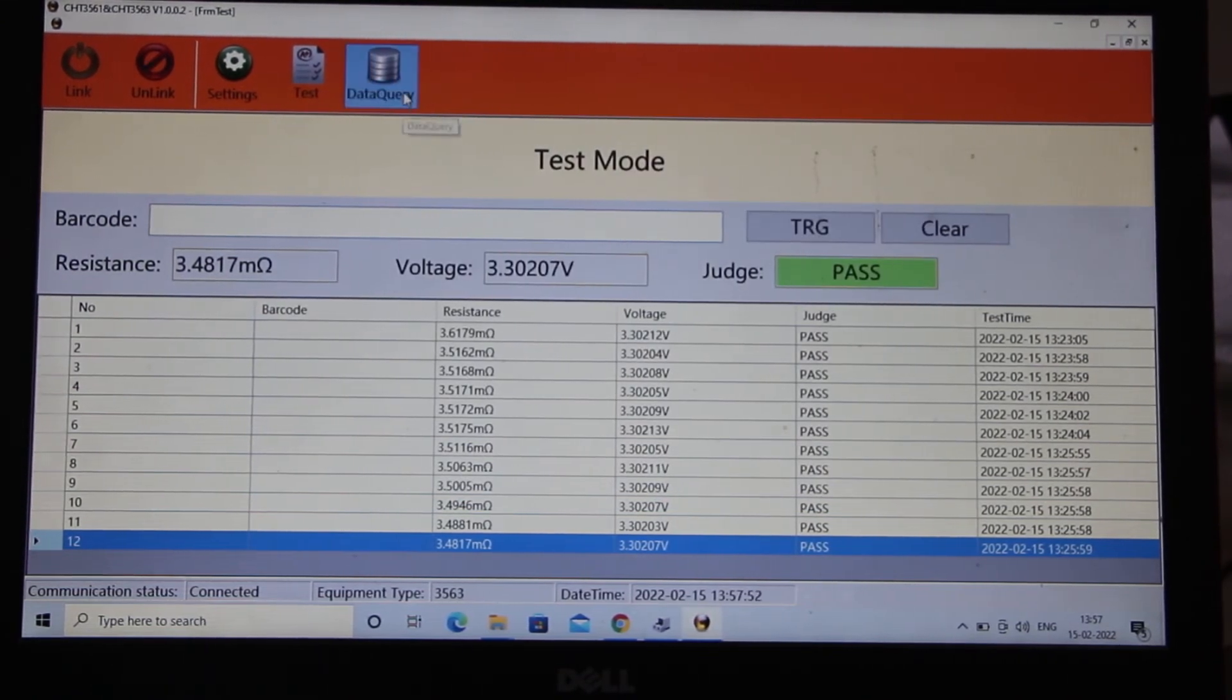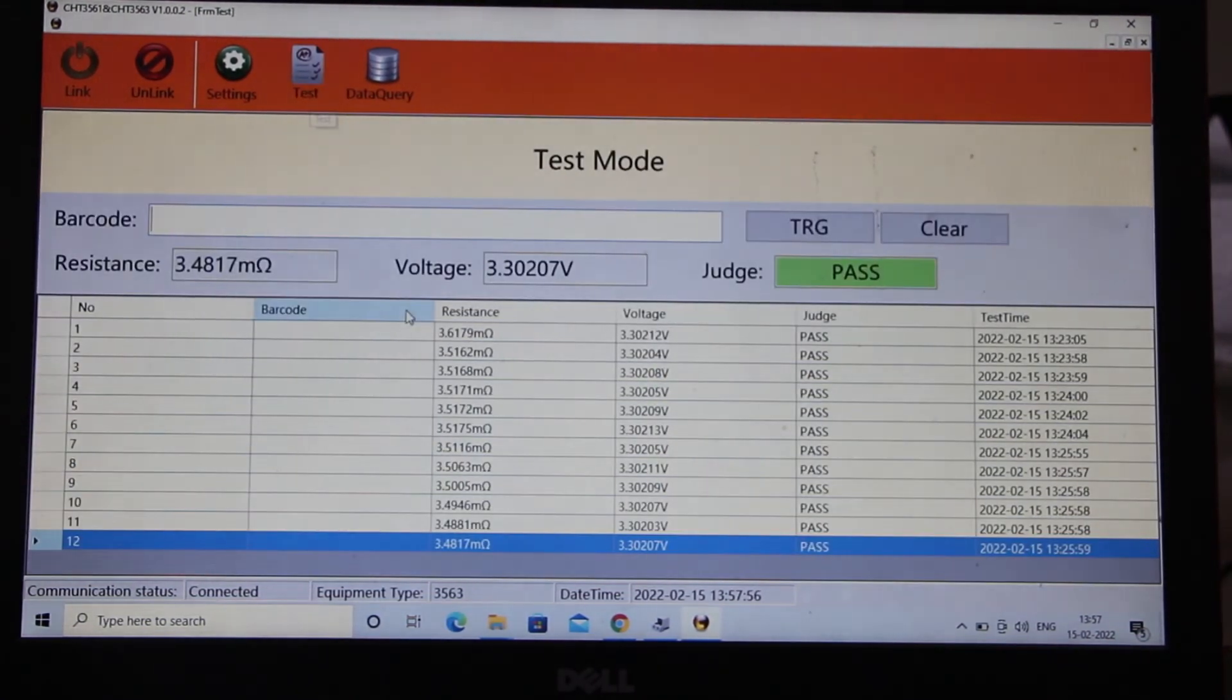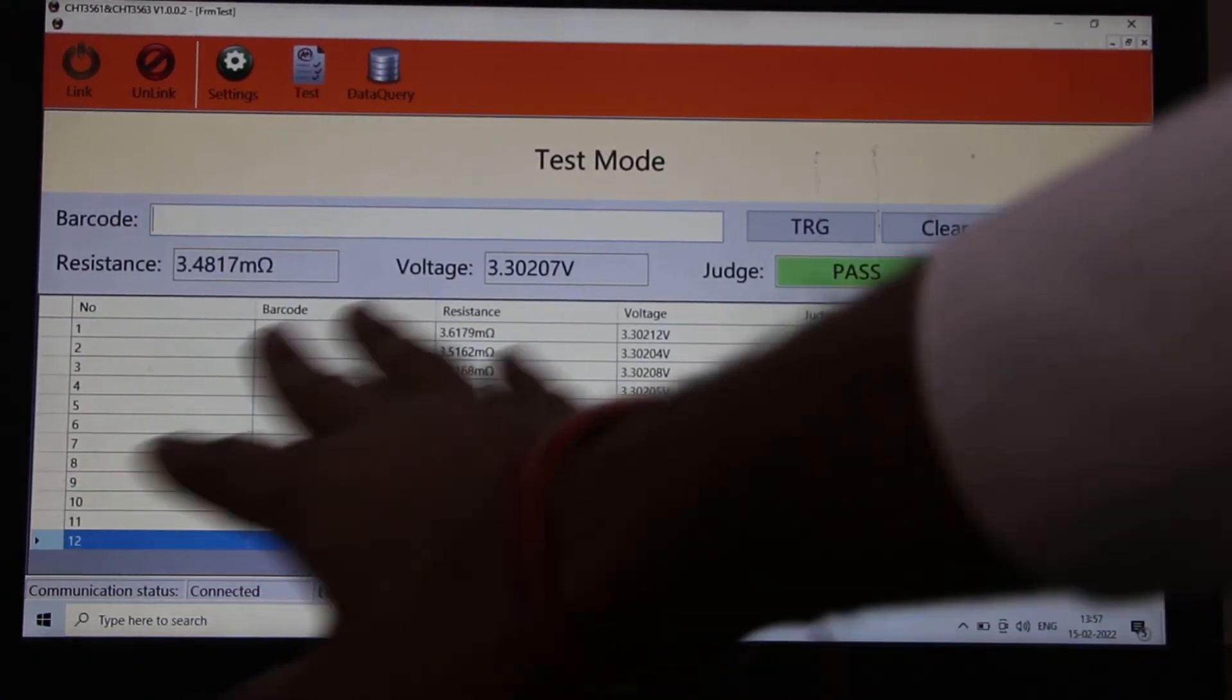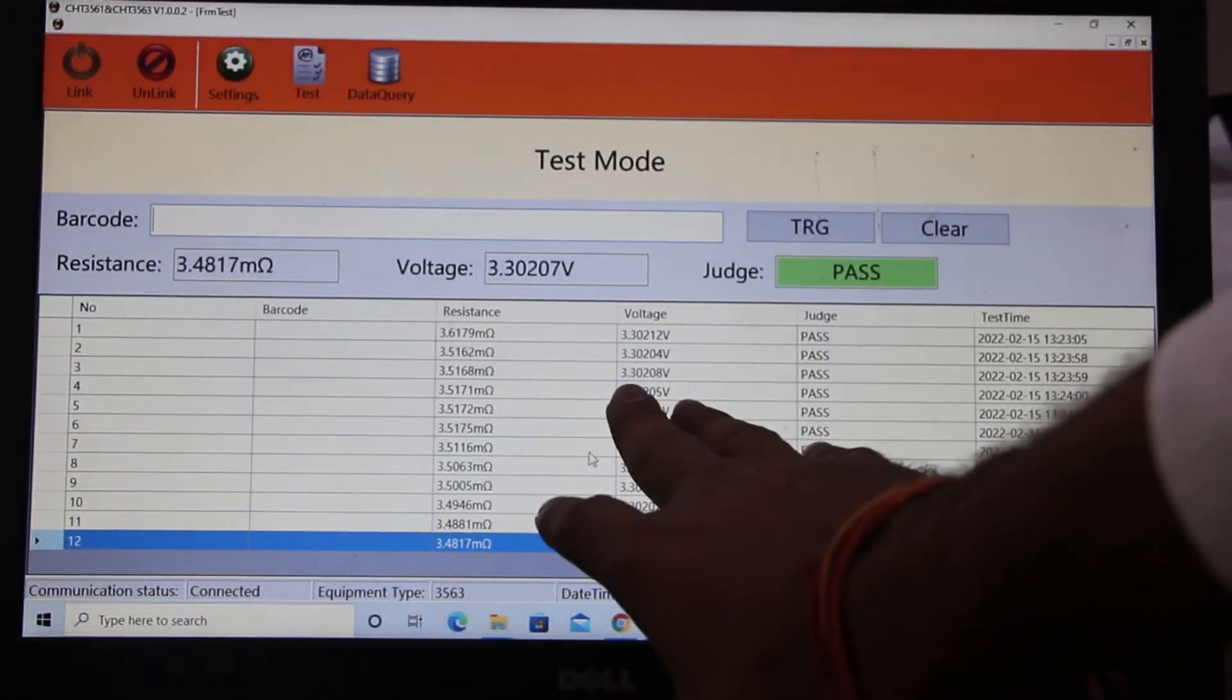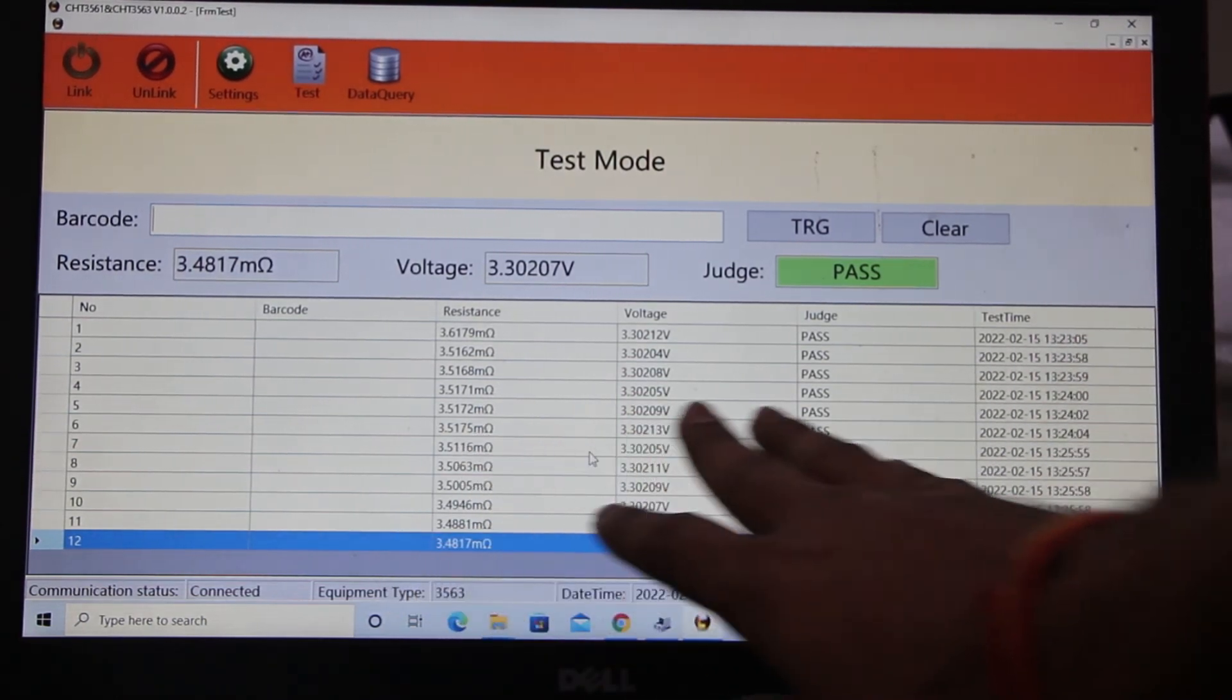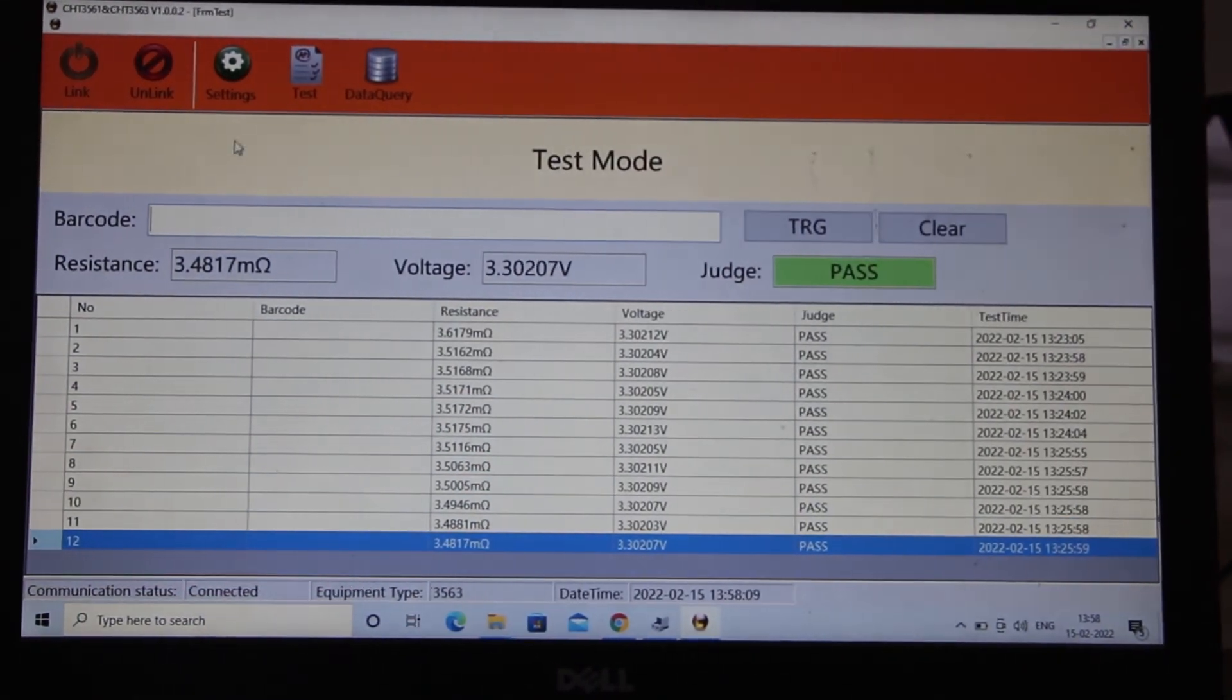Query data means you can get data from there testing means you can get your testing result from there as you can see that we have tested lots of times and each and every time we are getting some resistance and voltage according to your management purpose and the pass means it is within the range because in setting we put the range.